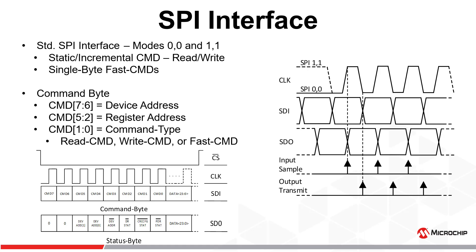The status byte offers a convenient means of detecting and managing the current status of various interrupt sources, such as data ready alerts, configuration register CRC errors, and POR events, without the need for the IRQ pin, as each interrupt bit can be polled and cleared with each status byte transmission. The status byte will also contain information regarding whether the device address bits in the current command byte match the device address bits hard coded to the device. Currently, all MCP-3X6X devices have a default device address of 01.